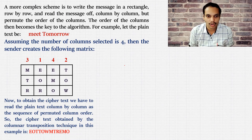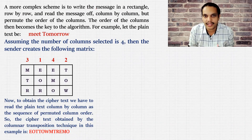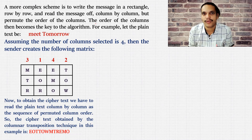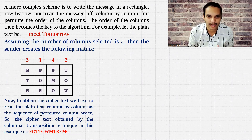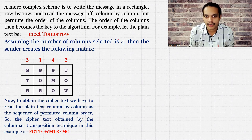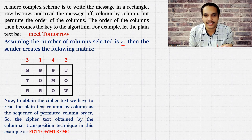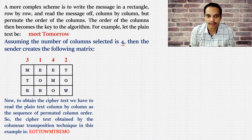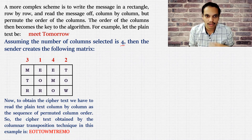A slightly more complex technique is called columnar transposition. Here, you write the message in a rectangle row by row and read it off column by column, but permute the order of the columns. Both the sender and receiver agree on a particular order of reading, which we call the key. For example, I want to send the message 'meet tomorrow' and I tell my friend that the keyword is four — meaning I'm going to use four columns.